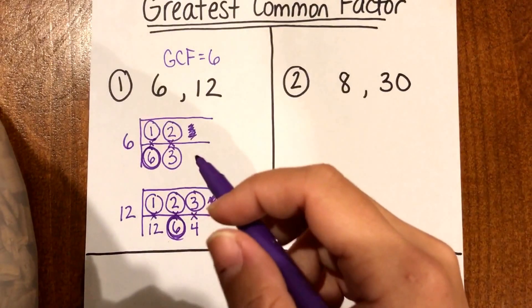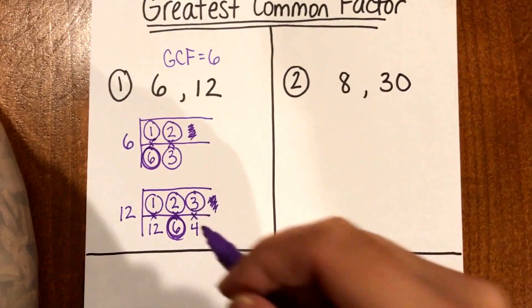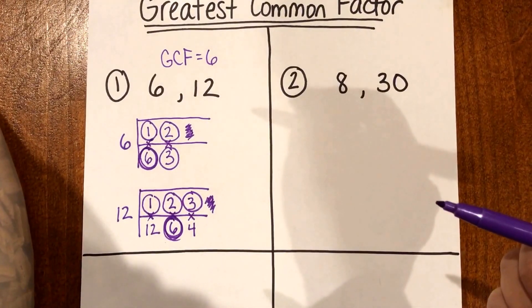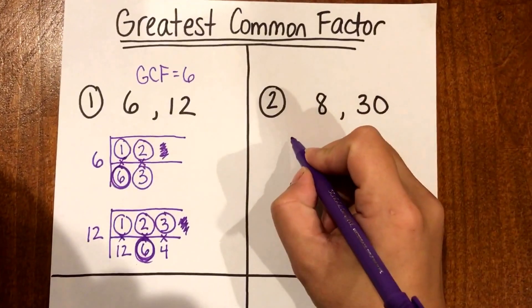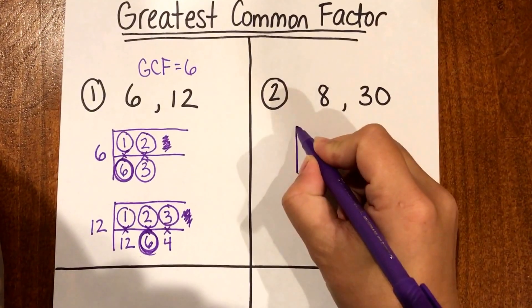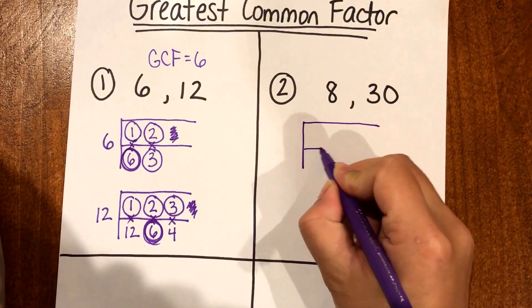So as you can see in number one I did the F method and just to compare our greatest common factor answer I'm gonna start with the F method for number two. Alright so I know that I need to start with my two long F's.